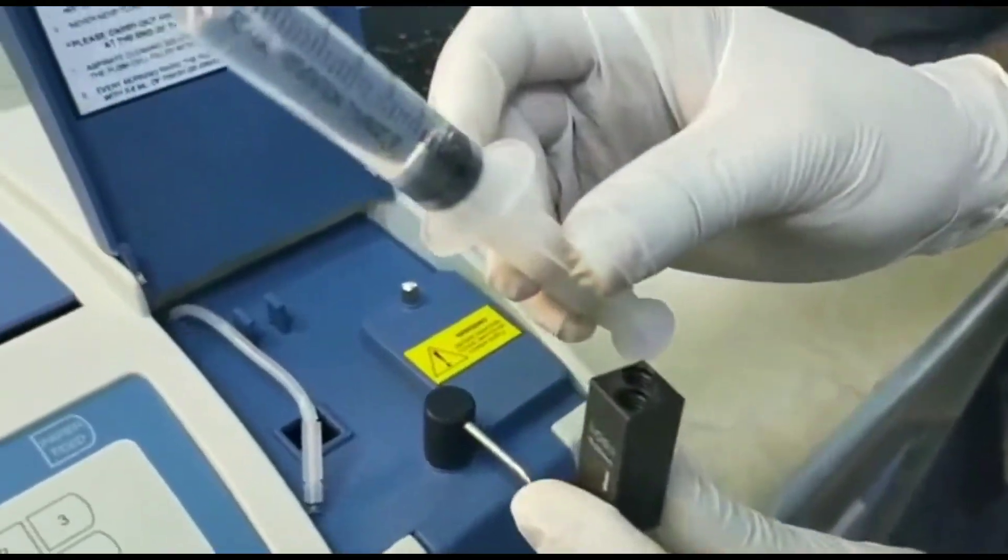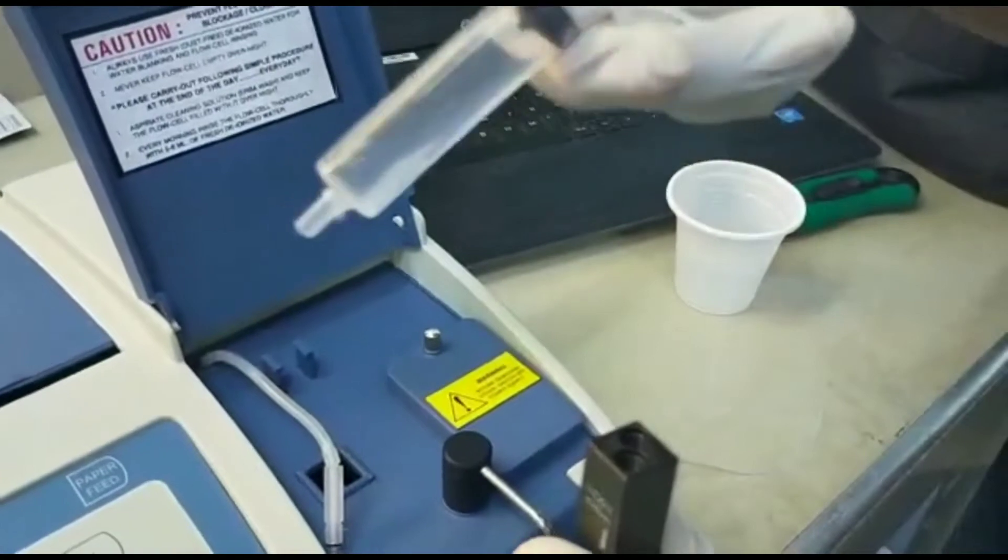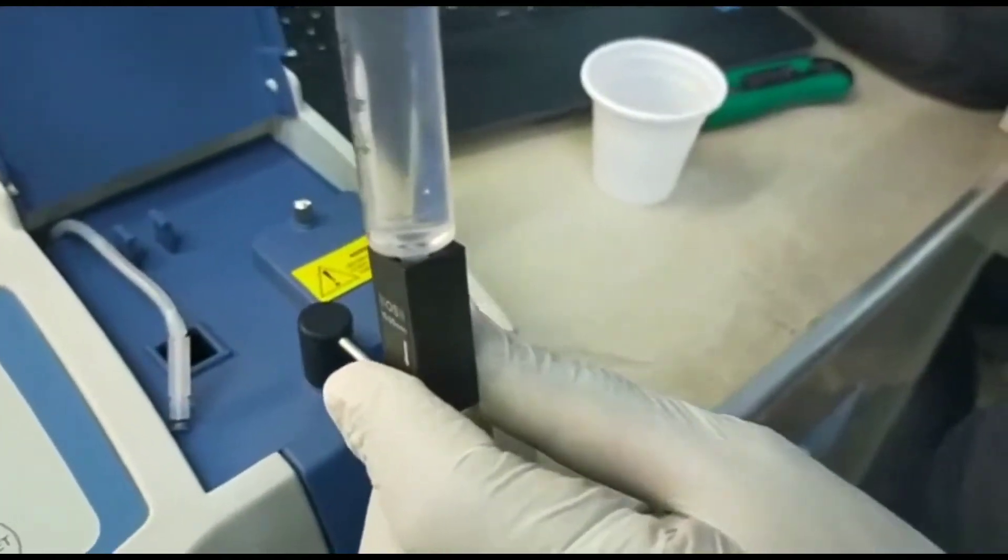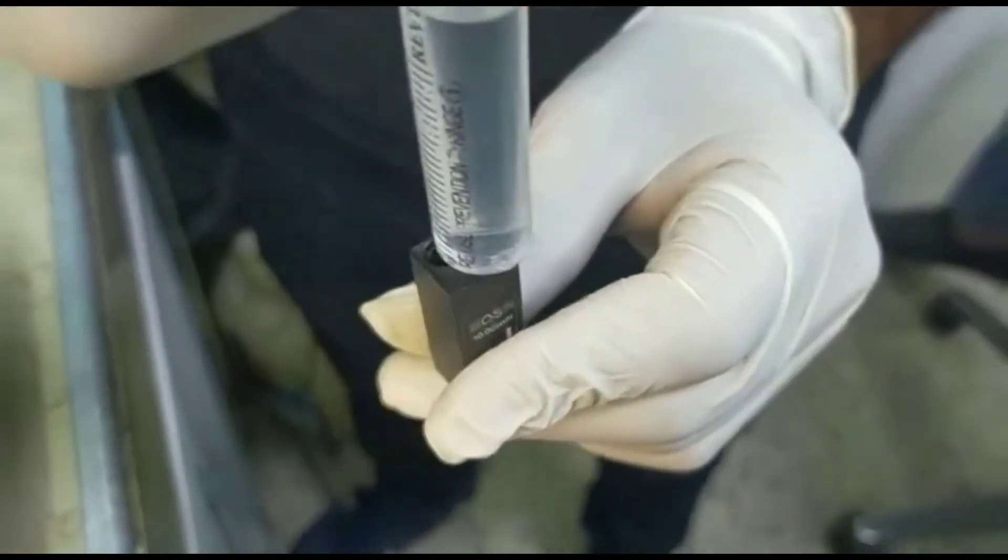Then take a syringe with distilled water, place it into one of the holes of the flow cell and then flush the flow cell.